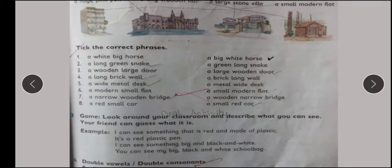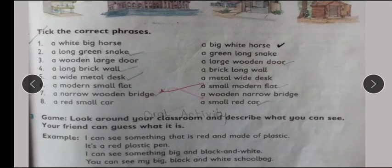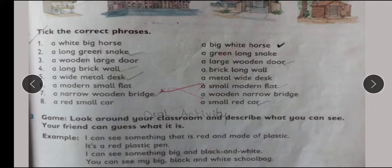Ab unhane kia kha hua hai? Tick the correct phrases. Ab yeh dho phrases hai, hummare pas one and two. Usko hummne tick kare dhe na hai. First one is done for you — a big white horse. A long green snake, ya a green long snake? Logical sense wali sentence ko hummne tick kare na hai. So this one is right: A long green snake.